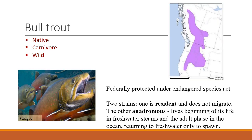An important fish species occurring on streams and rivers on rangelands is the bull trout. It's native, carnivorous, and wild. It's federally protected under the Endangered Species Act, and if it occurs on rangelands, it can cause conflicts between recreation and ranching because streams need to be protected for this species. Interestingly, there are two strains — one is resident and doesn't migrate; another is anadromous, meaning it lives in fresh streams for a while, then goes to the ocean, and returns to fresh streams to spawn. Salmon and bull trout are both rangeland species that are anadromous.